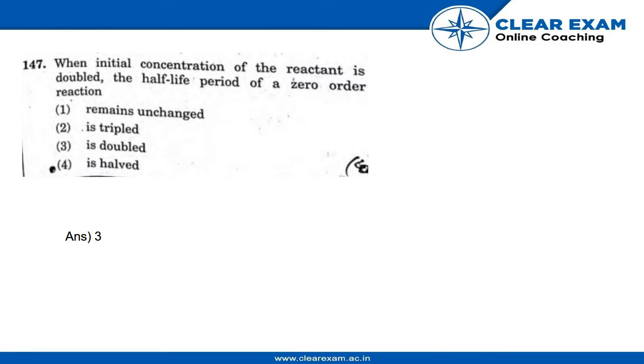Hello guys, now let us discuss question 147. The question is: when initial concentration of the reactant is doubled, the half-life period of a zero-order reaction will be - the options are: 1) remains unchanged, 2) is tripled, 3) is doubled, and 4) is halved.